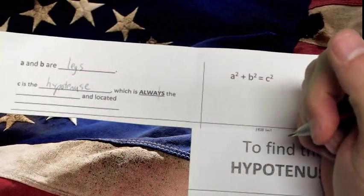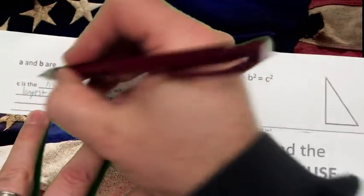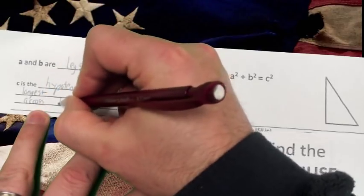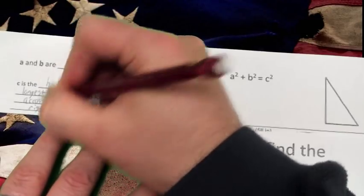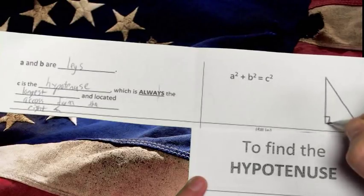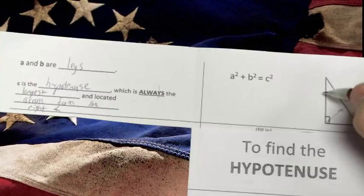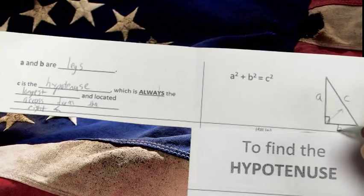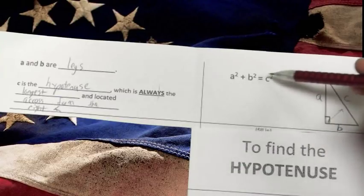It's always the largest or longest and located across from the right angle. If we look over here, our right angle is this one. Directly across from it, also the longest side, is C, the hypotenuse. A and B are our remaining two legs, and it does not matter one bit how you arrange those. A, B, B, A, doesn't matter. Now, remember our Pythagorean Theorem is A² + B² = C².